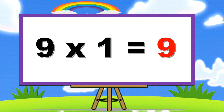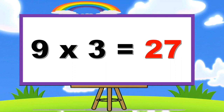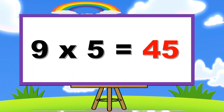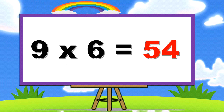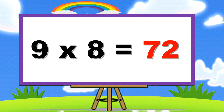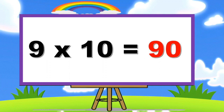Table of Nine. 9 × 1 = 9, 9 × 2 = 18, 9 × 3 = 27, 9 × 4 = 36, 9 × 5 = 45, 9 × 6 = 54, 9 × 7 = 63, 9 × 8 = 72, 9 × 10 = 90.